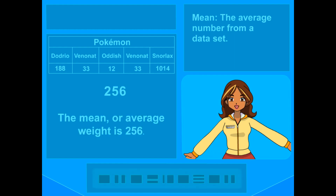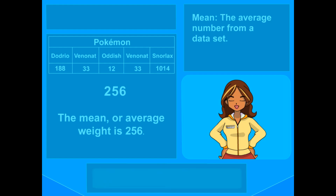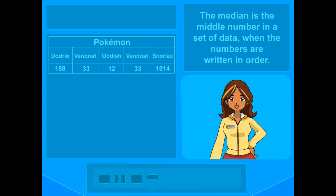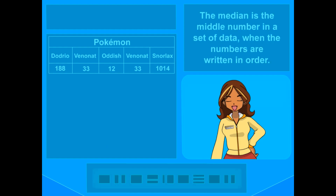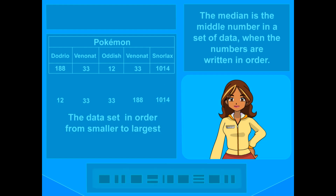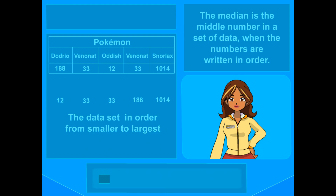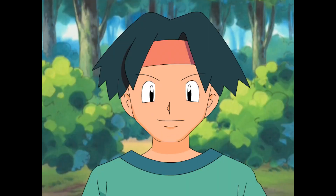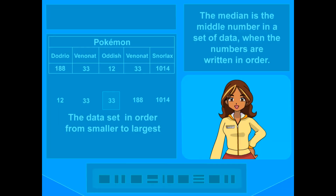So the mean, or average weight, is 256. Now if we want to know what falls in the middle of the data set, that's the median. It's the middle number in a set of data when the numbers are written in order. First, put the numbers in smallest to largest, or numerical order. For our set, it would be 12, 33, 33, 188, 1,014. What number is in the middle of the list? 33! It's right in the middle of 5 numbers! So the median is the number that comes right in the middle.